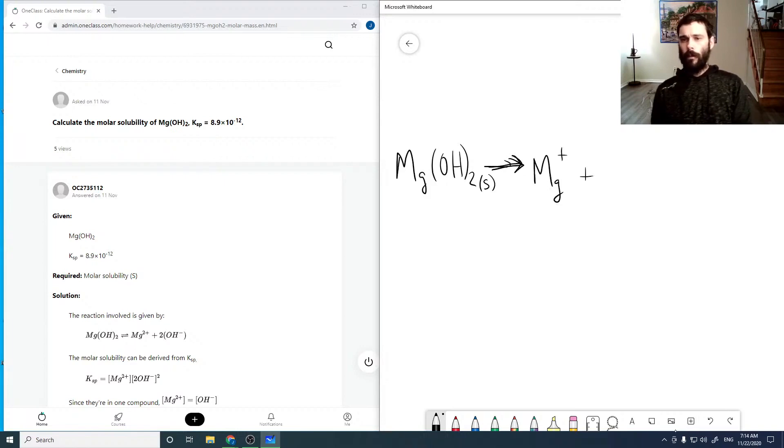So Mg²⁺ plus 2 OH⁻, and then these are all going to be aqueous.